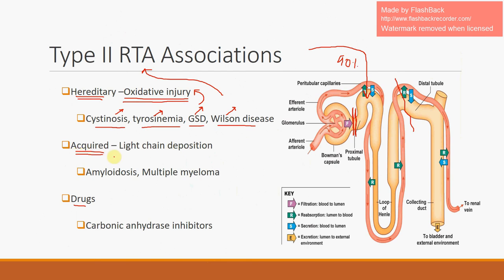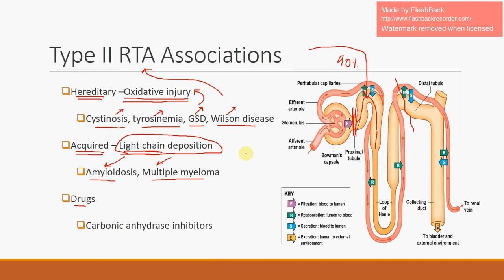Acquired causes of type 2 RTA include amyloidosis and multiple myeloma, where the central mechanism is light chain deposition in proximal tubular cells. Normally, endocytic processes within these cells can clear deposited light chains. However, in amyloidosis and multiple myeloma, light chain deposition overwhelms these endocytic processes, causing the cells to slough off and die, impairing bicarbonate reabsorption.